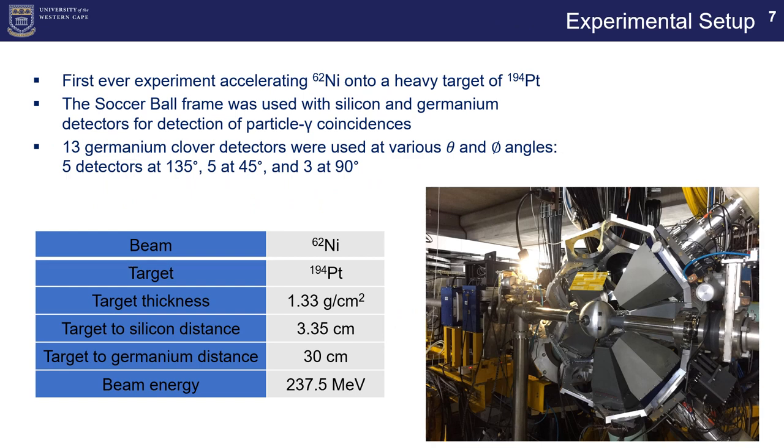All right, so let's follow up that with the experimental setup. This was the first ever experiment accelerating nickel 62 onto a heavy target of 194 platinum. The TIGRESS array was used with silicon and germanium detectors for detection of the particle gamma coincidences, and 13 germanium clover detectors were used at various theta and phi angles with five detectors at 135 degrees, five at 45 degrees, and three at 90 degrees with respect to the beam.